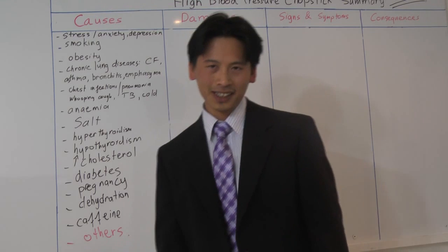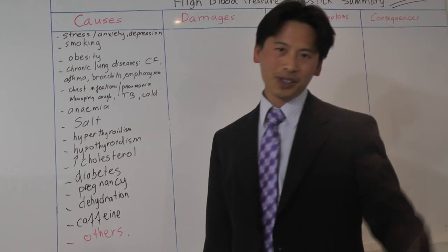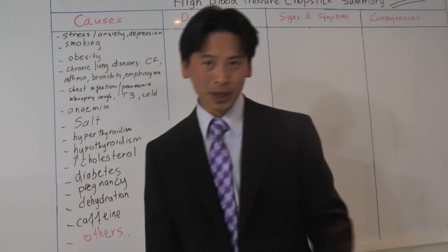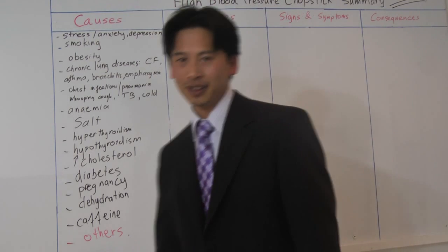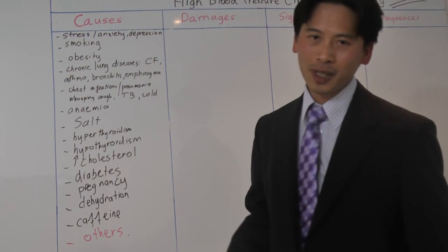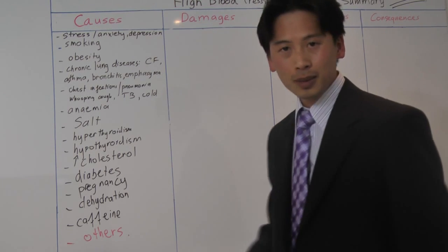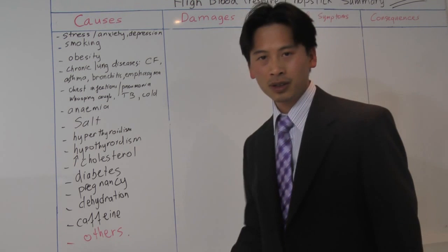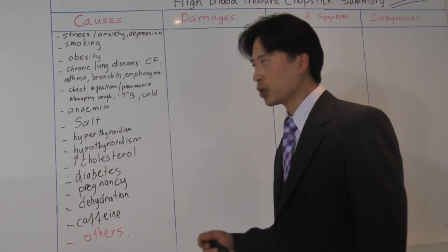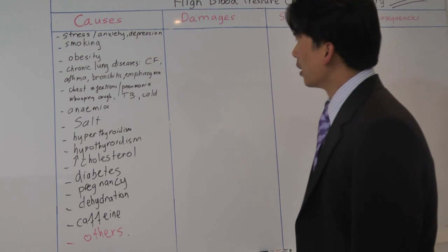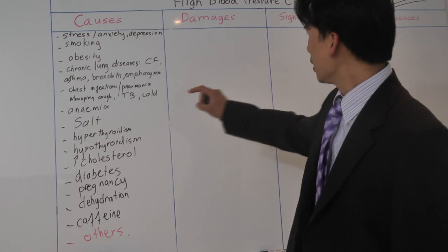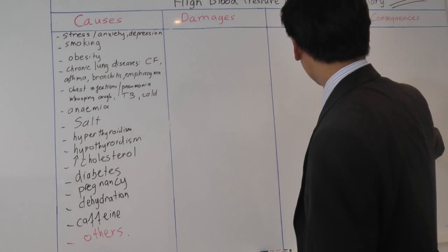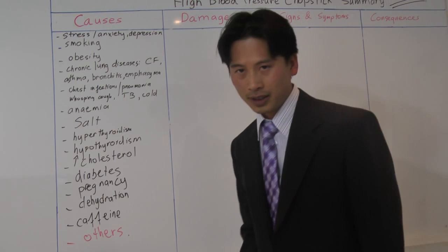Hello and welcome back. I hope you have some pen and paper handy. So where were we before? We were talking about how you could split the problems of high blood pressure into four smaller groups. The groups are causes, damages, signs and symptoms, and consequences.